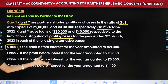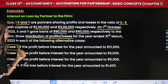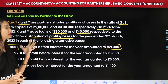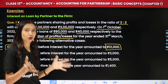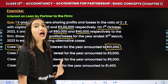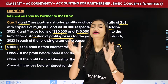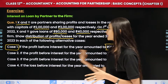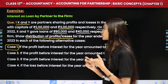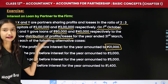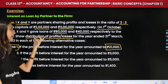Case 1: profit before interest for the year amounted to Rs. 21,000. This is profit before interest — we need profit after interest, because interest on loan is a charge against profit, so we must deduct it first. X and Y have loans of Rs. 80,000 and Rs. 40,000. There is no interest rate mentioned in the partnership deed, so we will use 6%.